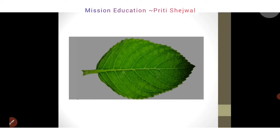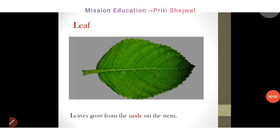What do you see on the slide? It is a leaf. How is the color of the leaf? It is green in color. Where does the leaf come from? Leaves grow from the node on the stem. Leaves are generally thin and flat. So what are the various parts of a plant? That is root, fruit, flower, stem, and leaves.